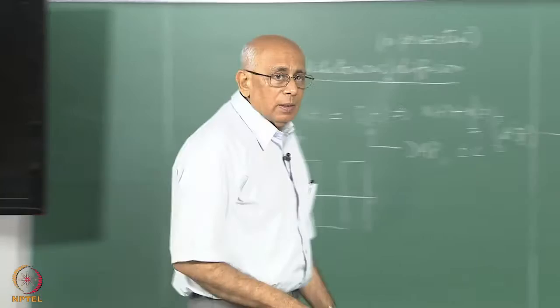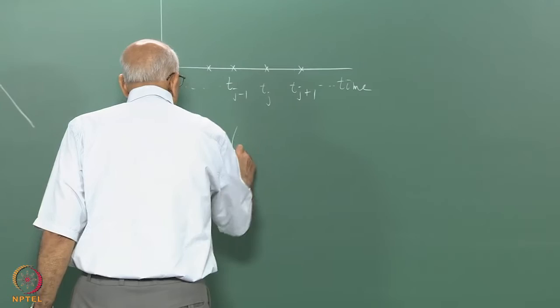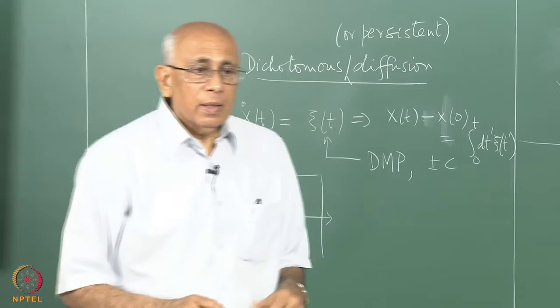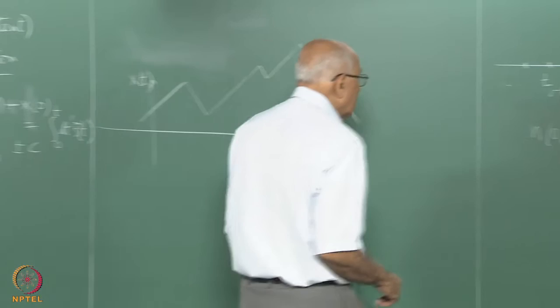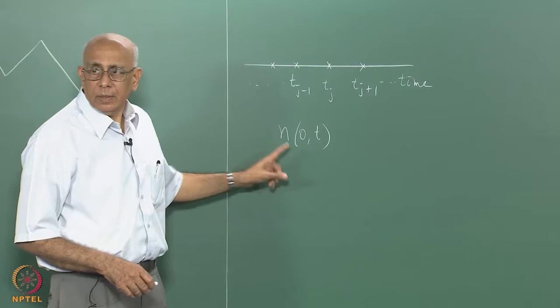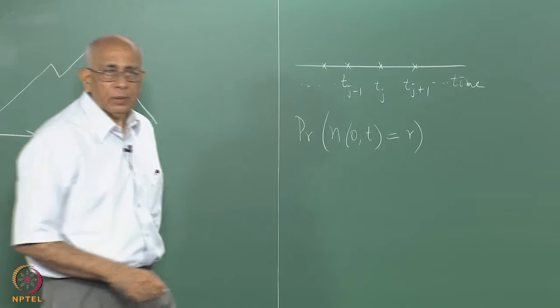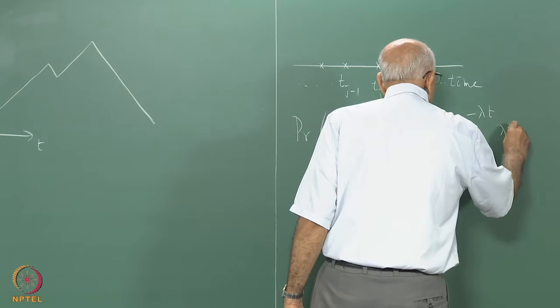The number N(0,t) — the number of such epochs occurring in a given interval 0 to t — is a random variable that can take any non-negative integer value. The probability that N equals some integer r is a Poisson distribution: P(N=r) = e^{-λt} (λt)^r / r!, for r = 0, 1, 2, ...